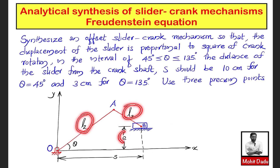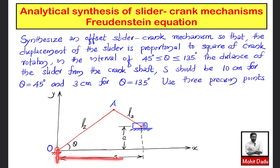The dimensions to synthesize are l2, l3, and e. The general variables are the instantaneous position of the crank, theta, and the instantaneous position of the slider, s. In the 4-bar mechanism the variables were theta and phi representing angles, but here theta represents the crank angle and s represents the displacement of the slider.